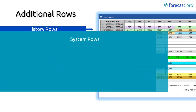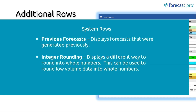And finally, let's discuss the system rows. There are two types of system rows built into Forecast Pro: previous forecasts and integer rounding. The previous forecasts will display your forecast from the previous month, the previous two months, etc. This can be very helpful when looking at differences in our current forecast versus what we looked at last month. These are not a replacement for our forecast accuracy reports — they are a useful option when making adjustments. The second type is integer rounding, which allows us to look at data as whole numbers in a rounded way, especially useful for extremely low volume data.